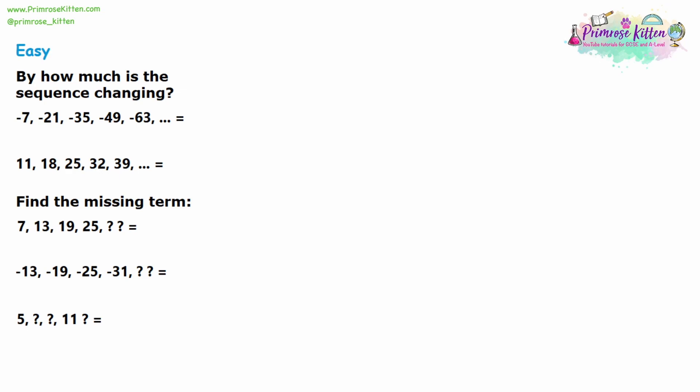We're going to have a look at linear sequences. You might be asked a variety of questions about linear sequences and the key is to look at the gaps in between the numbers. So for example, in question one, ignoring the negatives for now, we have 7, 21, 35, 49 and 63. You need to think: what do I add to 7 to get up to 21? A good way to do this is column subtraction — we're starting at 7, trying to get to 21. We borrow one, so 11 take away 7 is 4, and with the leftover we get 14. So between 7 and 21 there is a gap of 14.